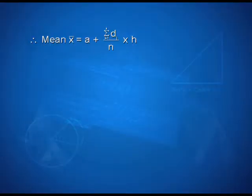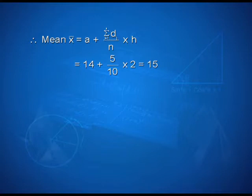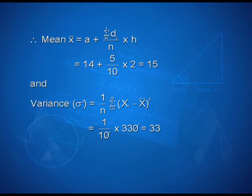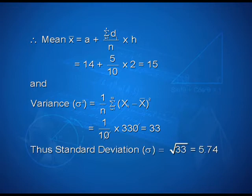Therefore, using the formula, mean x bar is equal to a plus summation i varying from 1 to n of di upon n into h. We have 14 plus 5 upon 10 into 2 is equal to 15. And variance sigma square is equal to 1 upon n into summation i varying from 1 to 10 of xi minus x bar whole square, that can be calculated as 1 upon 10 into 330, that gives us 33. Thus, the standard deviation sigma is equal to root 33, that is equal to 5.74.